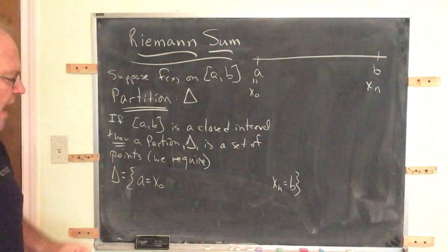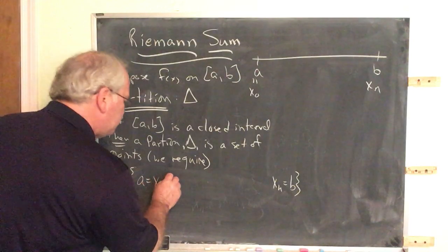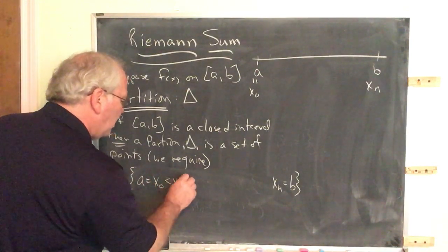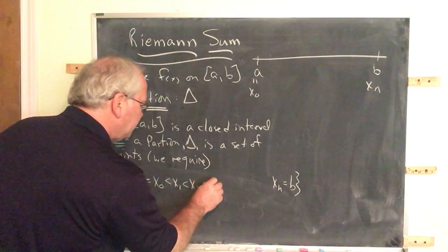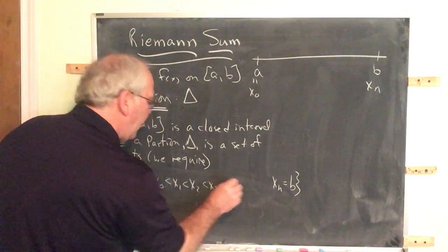Between there, you have as many as you like. The other requirement is they must be in order: x0 is less than x1, which is less than x2, which is less than x3, and so on.